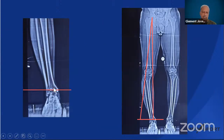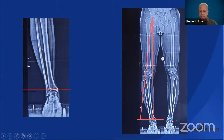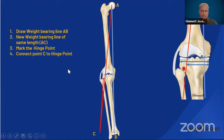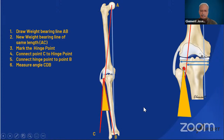On the X-ray, the ankle joint line is extended horizontally, and the new intended weight-bearing line connects the center of the femoral head through the point of correction to the extension of the lateral ankle joint line — this is point C. The hinge point is marked just below the tip of the fibular head, corresponding to the epiphyseal marking, about 1 cm from the lateral tibial cortex. A line is then drawn from point C to the hinge point, and we need to determine the angle between C, the hinge point, and point B.